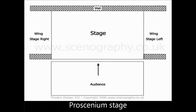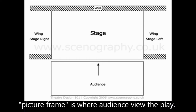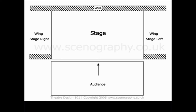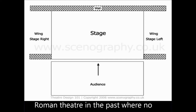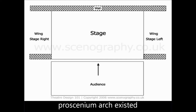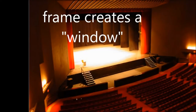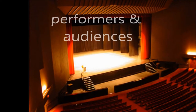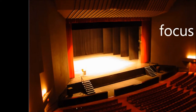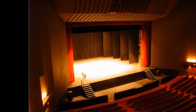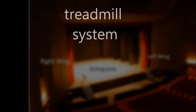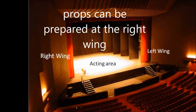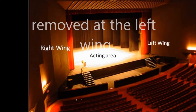Proscenium Stage — the stage where the proscenium, a picture frame, frames the playing area. The wings are spaces on either side extending offstage. This was similar to the Roman theatre in the past where no proscenium arch existed. We chose the proscenium stage because the frame creates a window, giving the audience a good view as the performers and audience only have to focus on the front. And since we have chosen the treadmill system, the props can be prepared beforehand at the right wing and removed at the left wing.